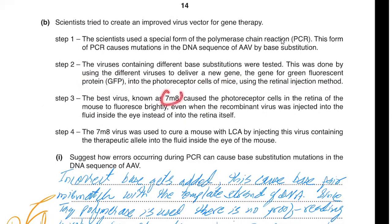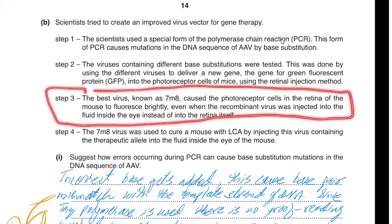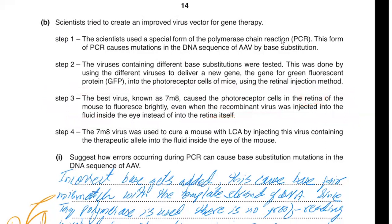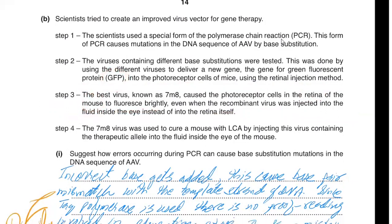Step three: the best virus, known as 7M8, caused photoreceptor cells in the retina of the mouse to fluoresce brightly. Importantly, even when the recombinant virus was injected into the fluid inside the eye rather than directly into the retina, the fluid carried the virus to the retinal cells, meaning retinal injection could potentially be replaced. The GFP protein served as a screening marker.